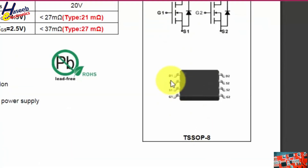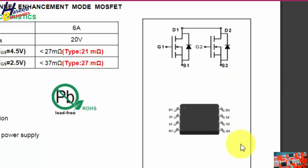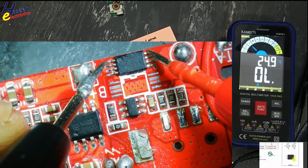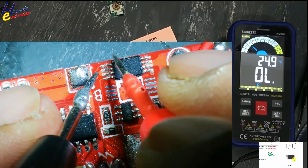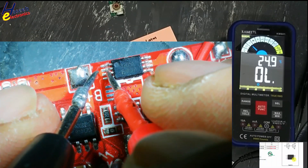Pin number 1 is drain. Pins 2 and 3 are source. Pin 4 is gate — that's the first MOSFET. On the second side: pin 5 is gate of the 2nd MOSFET. Pins 6 and 7 are source of MOSFET number 2, and pin 8 is drain. The drain pins are internally connected. One MOSFET on this portion, the 2nd MOSFET on this portion — drain, source, gate.